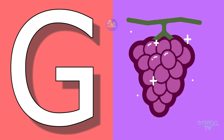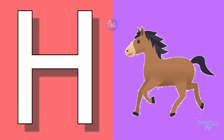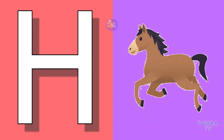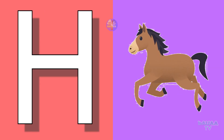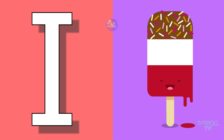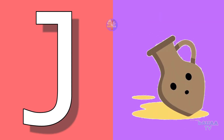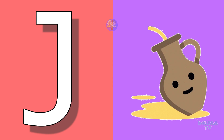G for grapes, grapes means angoor. H for horse, horse means ghoda. I for ice cream, ice cream means ice cream. J for jag, jag means jag.